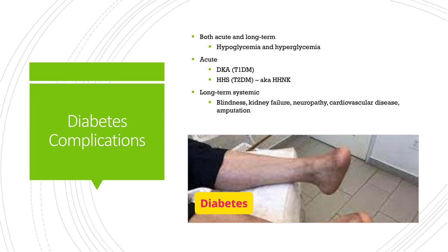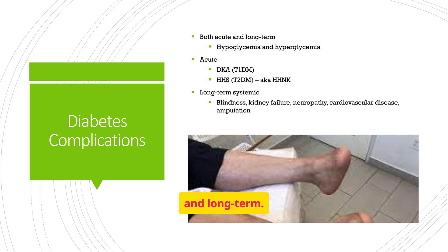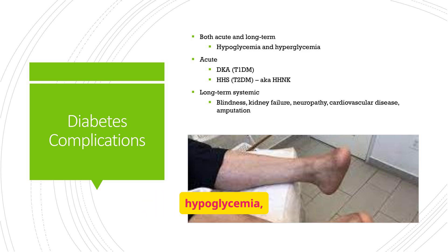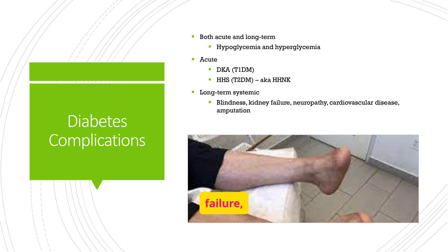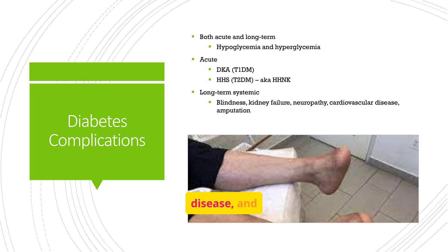Diabetes complications can be both acute and long-term. Acute complications include hypoglycemia, hyperglycemia, DKA, and HHS. Long-term complications include blindness, kidney failure, neuropathy, cardiovascular disease, and amputation.